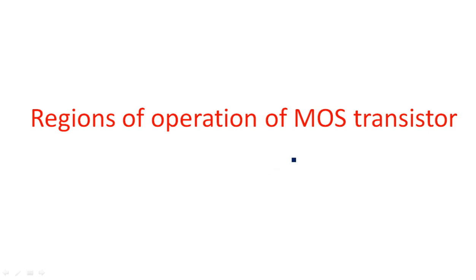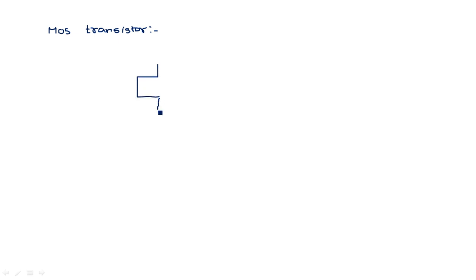If you take the MOSFET transistor, it may be either a PMOS transistor or NMOS transistor. Let us consider an NMOS transistor with gate, drain, and source terminals. The gate terminal is analogous to the base terminal in the bipolar junction transistor, the drain terminal is analogous to the collector terminal in the BJT, and the source terminal is analogous to the emitter terminal in the BJT.